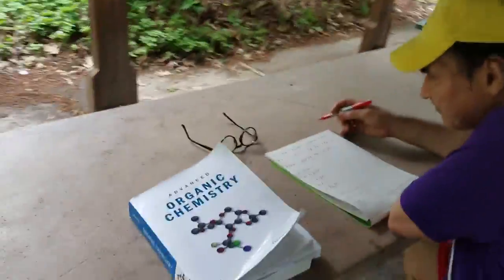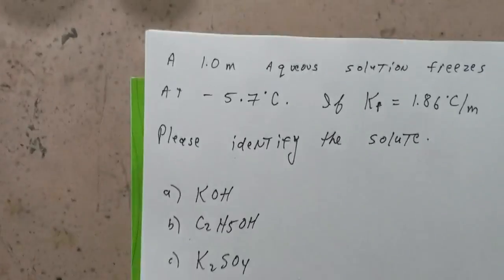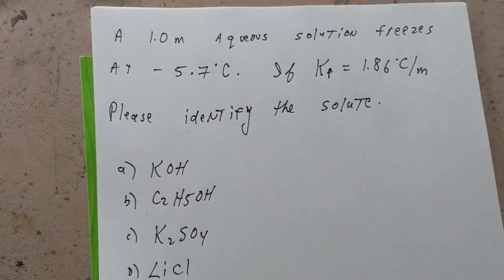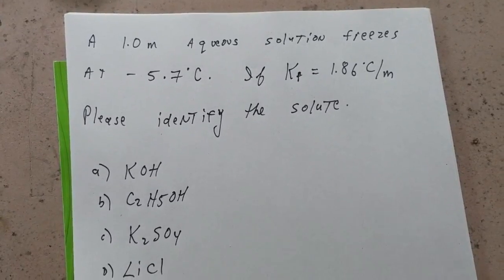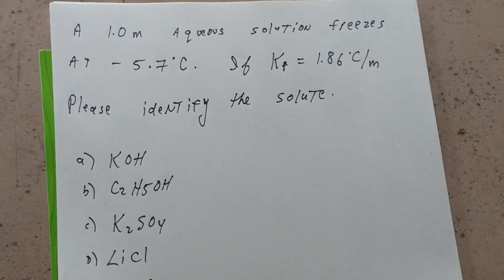Oh, I thought we were going to have a picnic. It says here we have a 1.0 molal aqueous solution freezing at minus 5.7 degrees Celsius. And I gave you the KF constant of 1.86 degrees Celsius per molal.